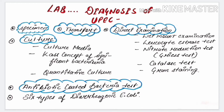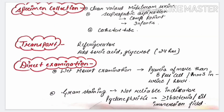Next is the laboratory diagnosis of uropathogenic E. coli, that is UPEC. In this lab diagnosis we will discuss specimen collection, transport, direct examination, culture, and the antibiotic-coated bacteria test.